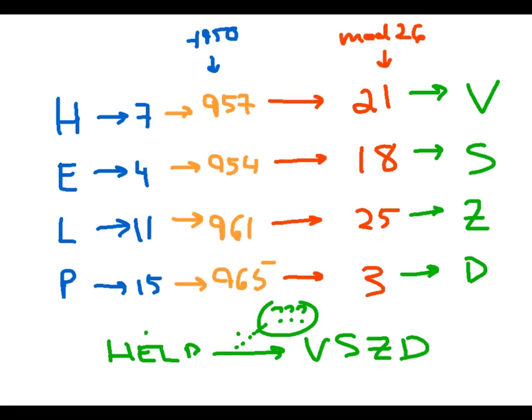So I can use the least non-negative residue idea to encrypt a message. Once my intended recipient has the message, presumably she has the same offset number 950 as I do, just like when if I want to share a locked box with another person, we both have to have the same key to the box. To decrypt, she can just go back through this process backwards. She can translate the letters in the message to numbers, subtract the offset value instead of adding it, and then find the least non-negative residue mod 26, and then reassign back to letters.